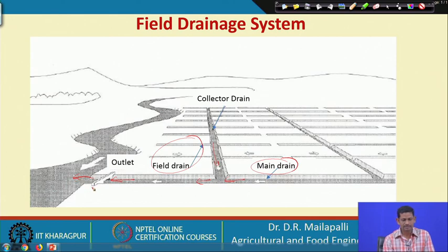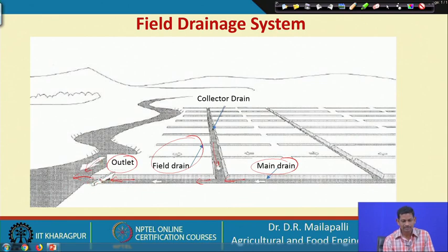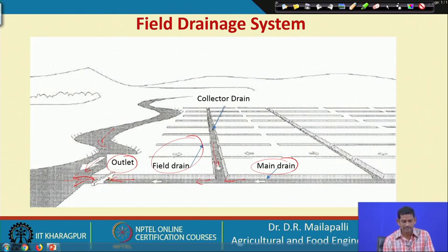From the outlet, water goes to the nearest stream or any water course. The outlet can be a gravity outlet or pump outlet. If the base of the main drain is higher than the base of the water course, the gravity outlet will work. If the base of the main drain is lower than the water level of the water course, water may flow back, so we use a pump outlet to pump water to the water course.